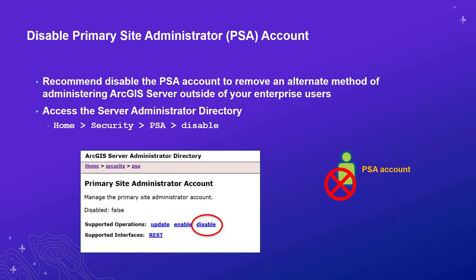Our next step is disabling the primary site administrator, or PSA, account. This is similar to when administrators of Windows systems disable the local administrator account on a new machine and promote a different account. This prevents people from knowing the default administrator username and potentially guessing associated passwords. We recommend disabling the PSA account to remove an alternate administration method outside your enterprise users, and promoting an enterprise user account to administrator for easier auditing and accountability. To disable the PSA, go to Home, Security, PSA, Disable in the ArcGIS Server Administrative Directory.